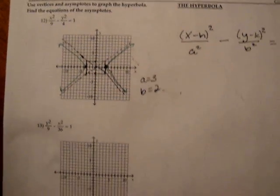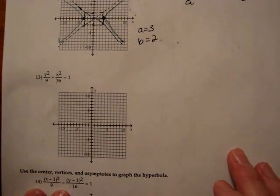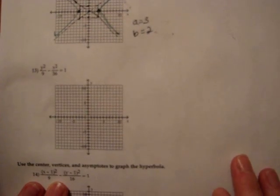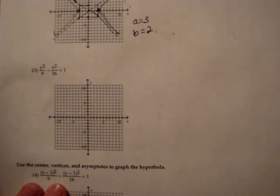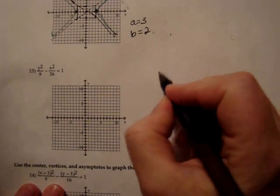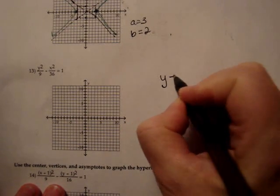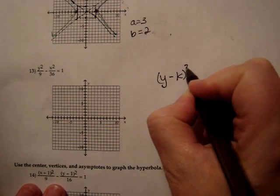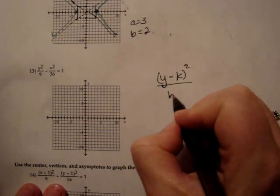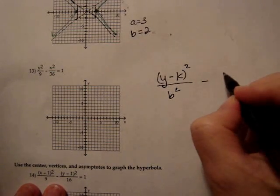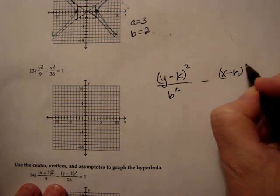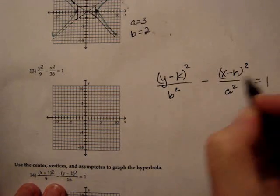The second version of the hyperbola, the y squared portion comes first. So let me write standard form for that. It would look like y minus k, notice the k stays there, over b squared minus x minus h quantity squared over a squared equals 1.